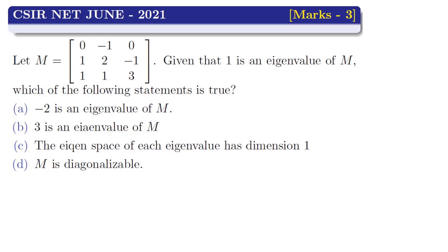Option A: -2 is an eigenvalue of M. Option B: 3 is an eigenvalue of M. Option C: the eigenspace of each eigenvalue has dimension 1. Option D: M is diagonalizable.